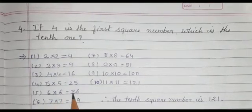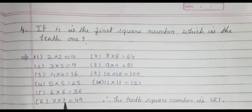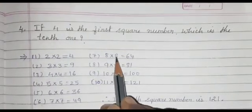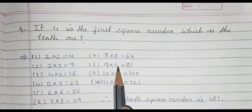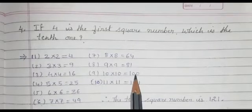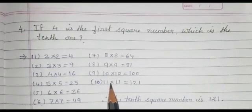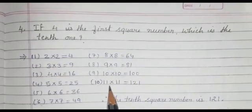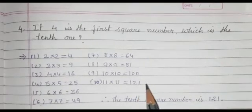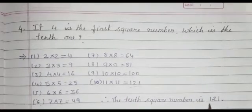Continuing: 6×6=36, 7×7=49, 8×8=64, 9×9=81, 10×10=100. And the 10th square number is 11×11=121. Therefore, the 10th square number is 121.